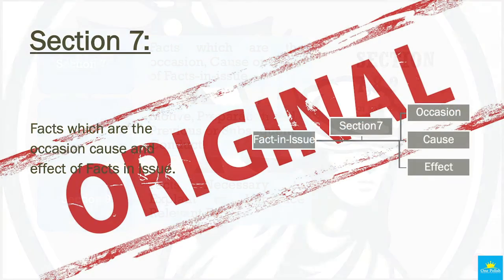We shall now talk of Section 7. As you can see on your screens, the title of the section is 'Facts which are the occasion, cause and effect of the fact in issue.' Take a look at the flowchart and you will immediately know the elements of the section. The three important elements of the section are the occasion, cause, and effect.